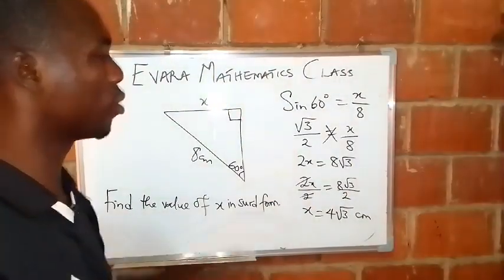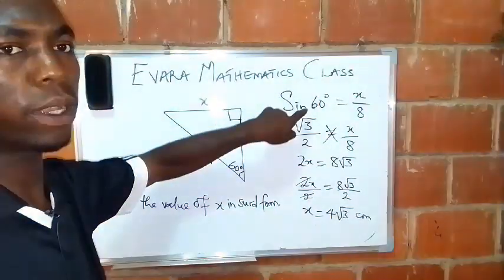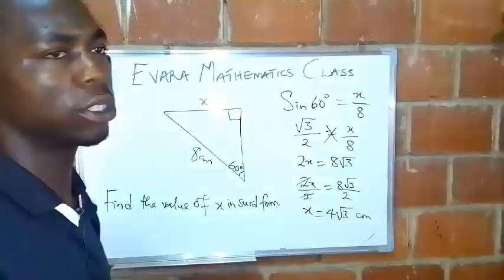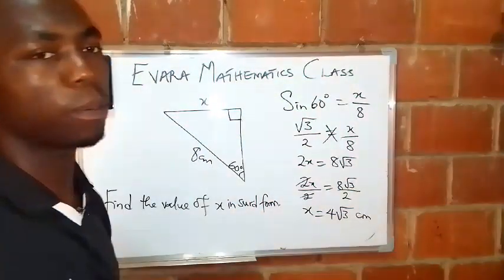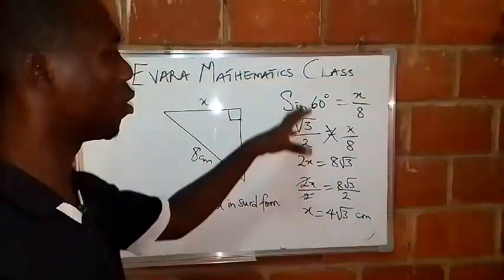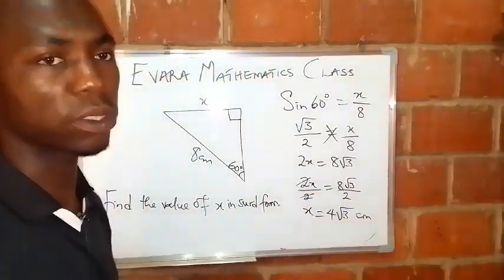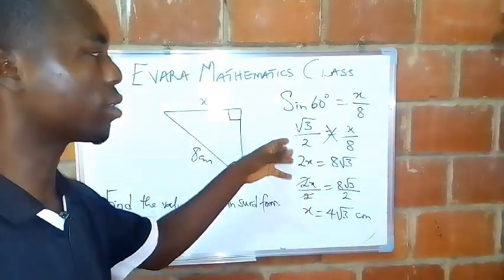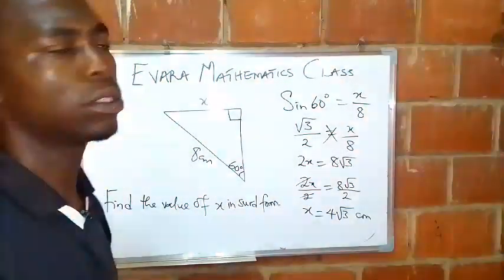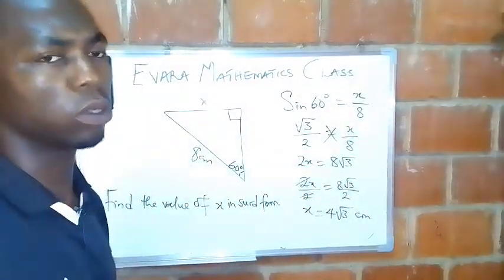So in this kind of question, we are not expected to use a calculator to find the value of sine 60 degrees. In one of our previous lessons, I gave a table of all the values of all the special angles: 30, 45, and 60 degrees. How to know their sine, cosine, and tangents without the use of a calculator. You can refer back to one of those lessons.